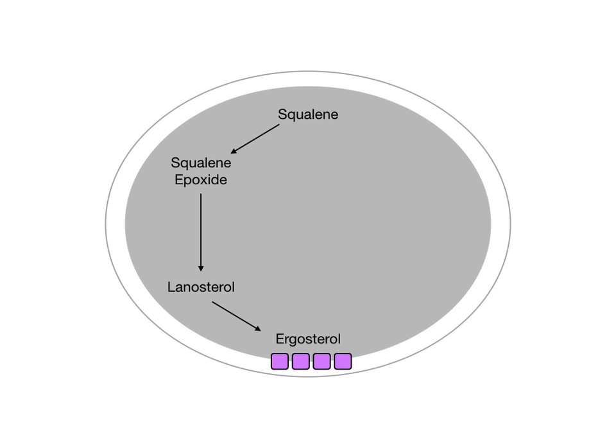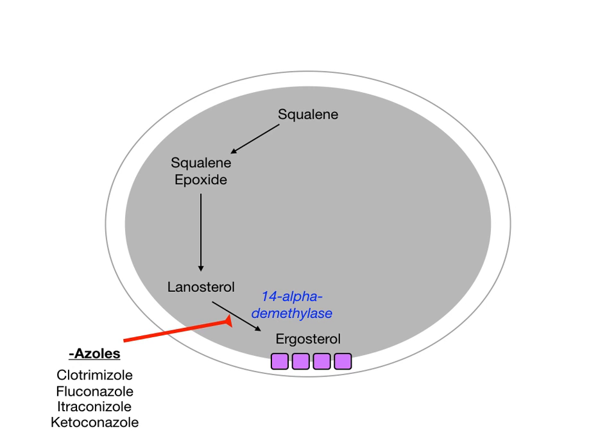Ergosterol is depicted here as little pink boxes — it makes up the plasma membrane and allows for the passage of materials, cellular functions, etc. The first drug group we'll look at prevents the formation of ergosterol. The conversion of lanosterol to ergosterol is done by an enzyme called 14-alpha-D-methylase. Our first group of drugs, the azoles, inhibits this enzyme.